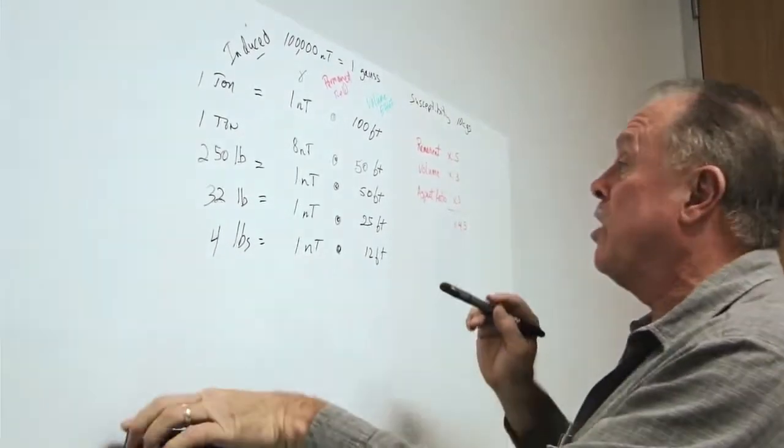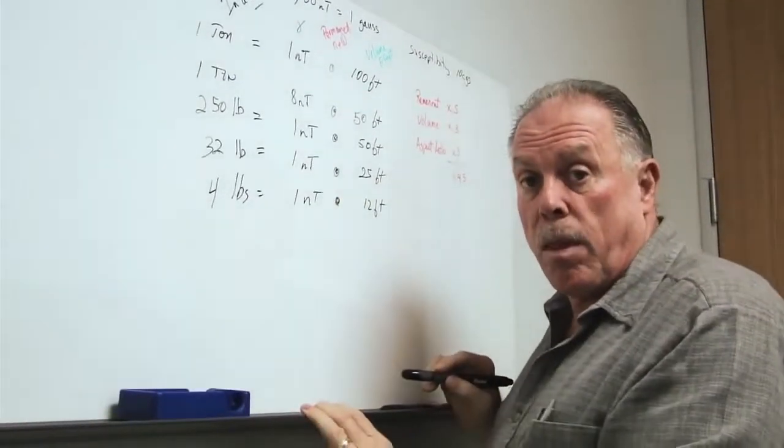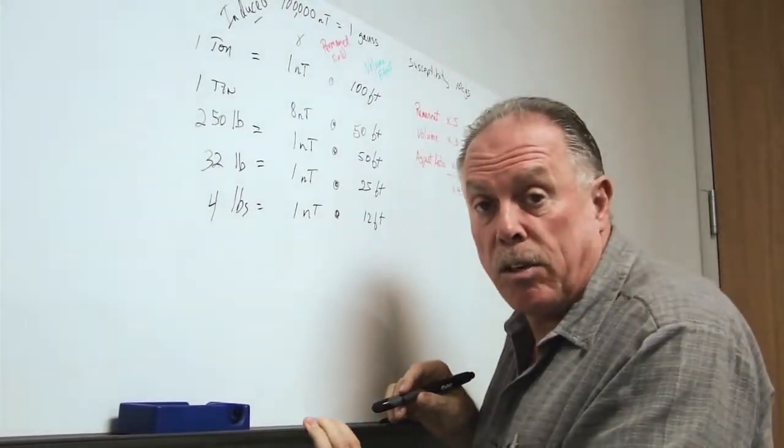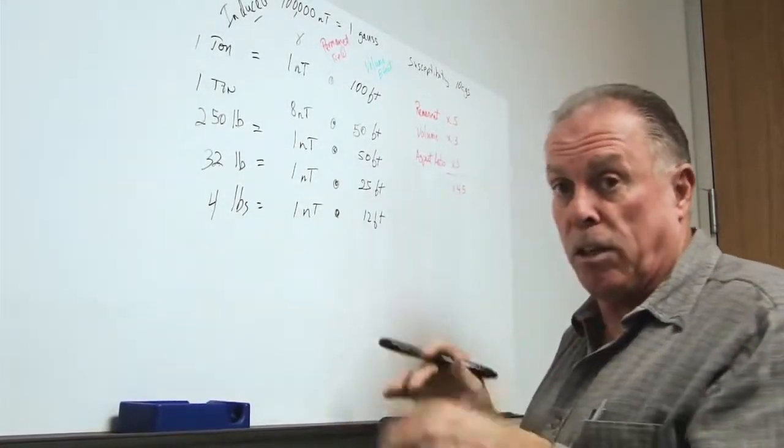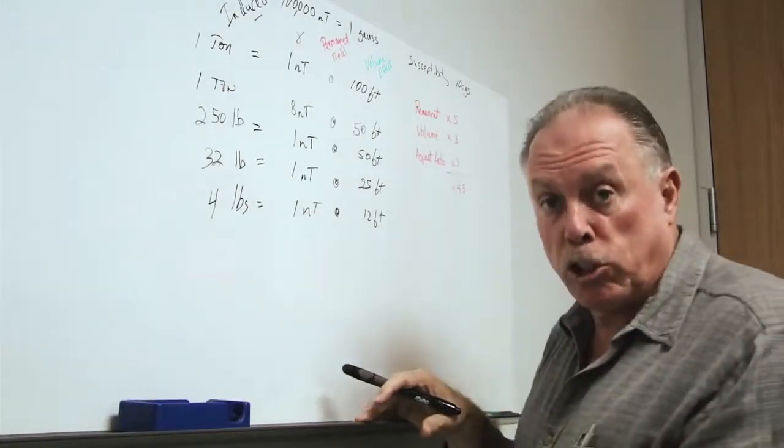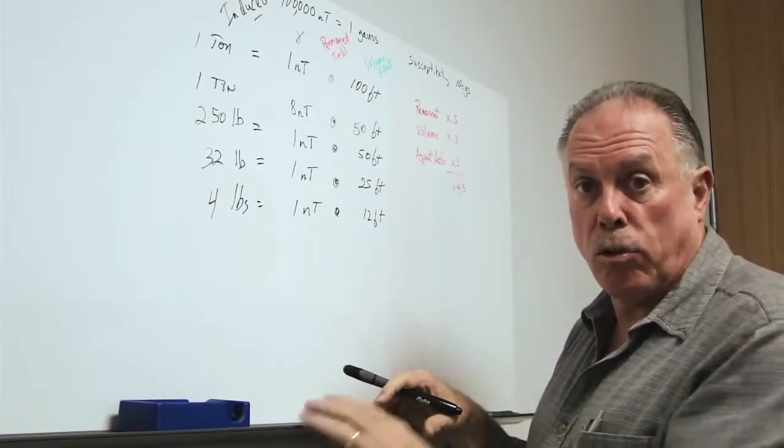So we saw that we could get as much as a 5 times increase in the remnant field. We also saw that we might be able to get up to a 3 times increase in the volume of the object if it's hollow, which is true of most unexploded ordnance, most ships, and other types of man-made artifacts, pipelines and so forth.